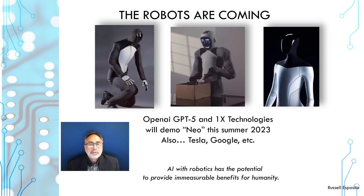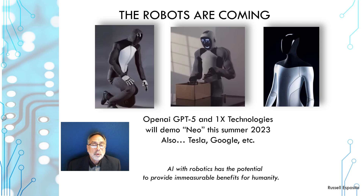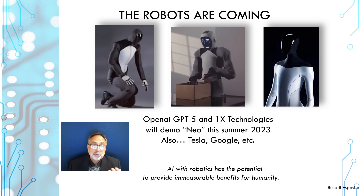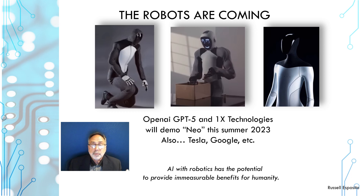It's probably hard to predict how the synergy of robotics and AI will develop. OpenAI is using ChatGPT-5 with a company called 1x Technologies to create a humanoid Android called NEO, this summer of 2023. Tesla, Google, and others are also working in this direction. I think AI robotics will have the potential to provide immeasurable benefits to humanity in every industry — taking dangerous jobs away from people and replacing laborious, routine, and tedious tasks. Those would likely be the first areas where robotics replaces humans.